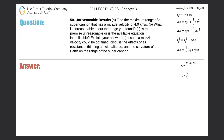Number 50, Unreasonable Results. Letter A: Find the maximum range of a super cannon that has a muzzle velocity of 4 kilometers per second.